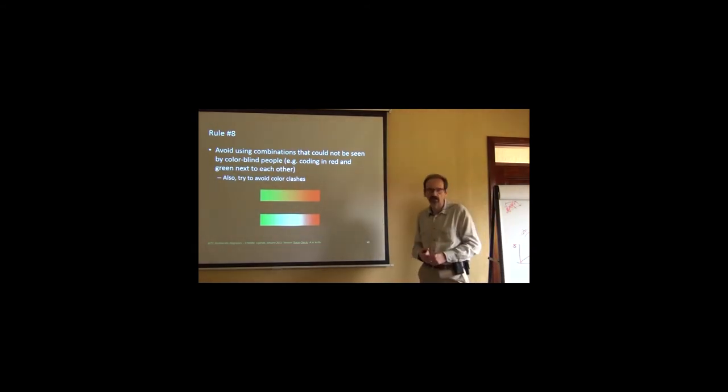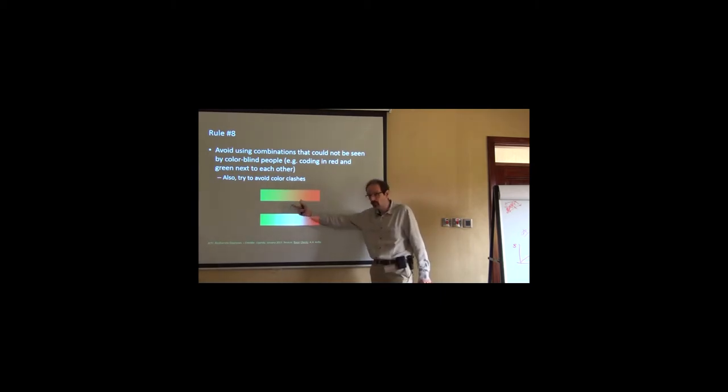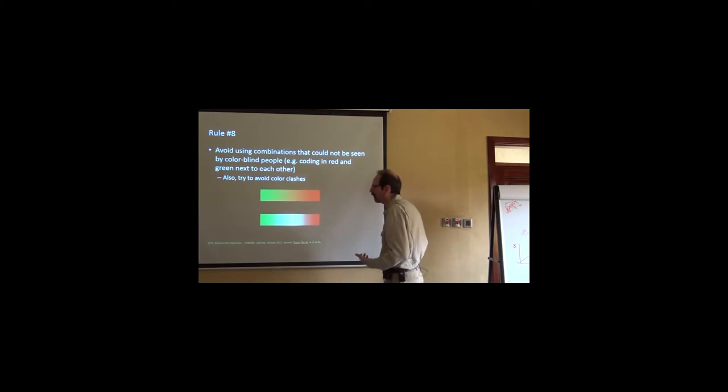Rule number eight: Avoid ugly things. Avoid using combinations that could not be seen by color blind people and try to avoid clashes. This is the most offending and the worst offending clash ever in plots: green, red. It's used as a test in the optical clinics to see whether you are myopic or hypermetropic. But they blend so horribly. If you need to use them, put a separator. Such as, a green, red gradient is a divergent gradient. So you basically use it to explain things that go one way in one direction, another way in another direction. Put some separator. This is the neutral, the mean. Use a white or something like that to separate them.